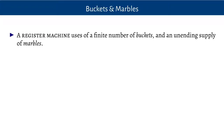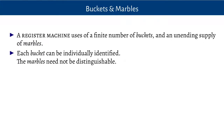A register machine uses a finite number of buckets, also called registers, and an unending supply of units that we can put in these registers, which you can think of as marbles or rocks or whatever you like. Each bucket can be individually identified, because we'll have instructions which say put a marble in bucket five or take a marble out of bucket three. But the marbles don't need to be distinguished — all we need to know is how many marbles are in each bucket.